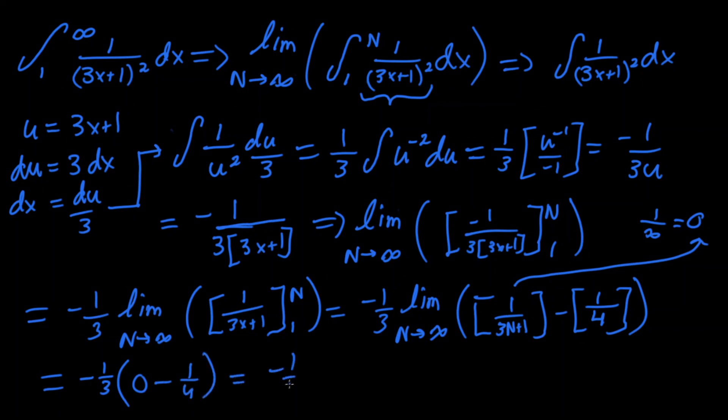That equals negative 1 third, times negative 1 fourth, don't forget that negative. Two negatives cancel out when you multiply them, that equals 1 twelfth.